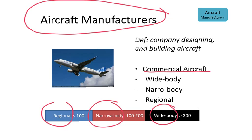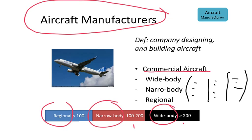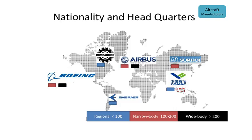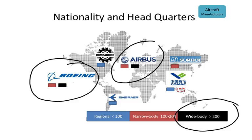Regional aircraft have roughly less than 100 seats, narrow body something between 100 and 200 seats, and wide body more than 200. One way to distinguish narrow body from wide body is that wide body normally has more than one aisle — normally two aisles between the different seats — whereas narrow body has a single aisle. For wide body, the big aircraft, we have only two manufacturers worldwide: Airbus and Boeing.